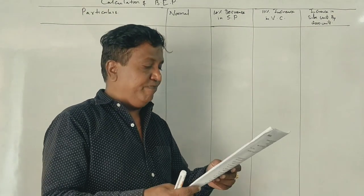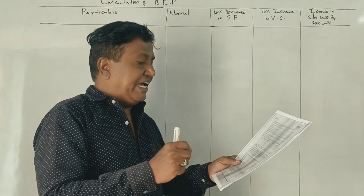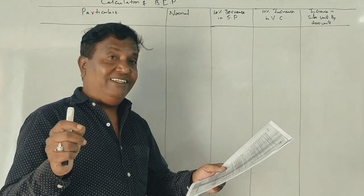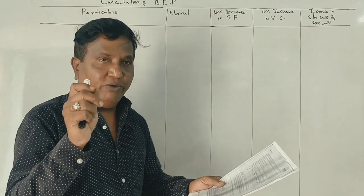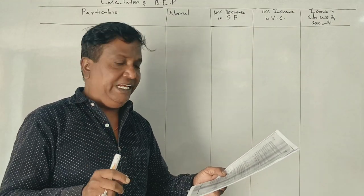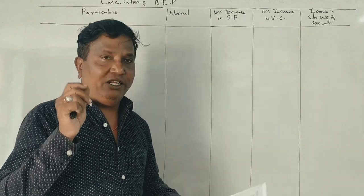A new corporation has prepared the following budget estimated for the year 2017-18. Sales units: 15,000 units. Fixed cost is 34,000. Sales value is 1,50,000.